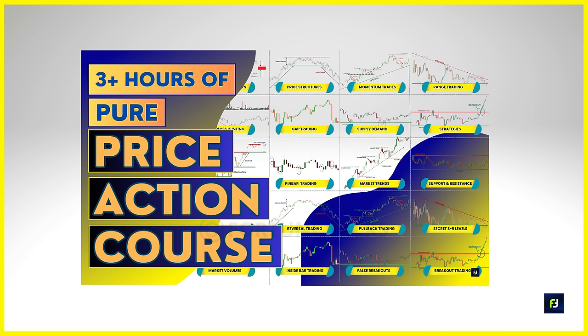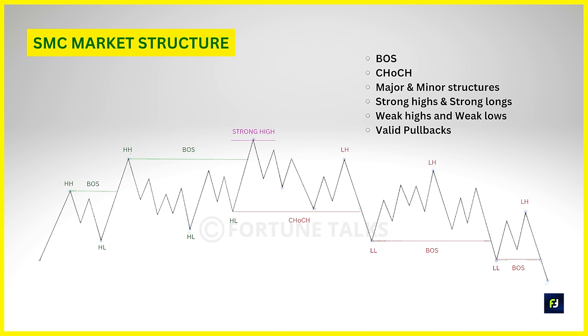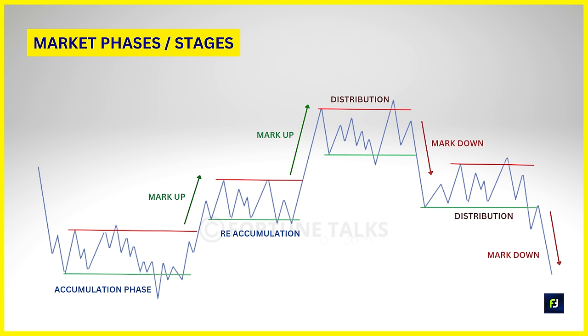You may ask: haven't we already discussed market structure and market trends in the price action course? Yes, we did, but when it comes to smart money concepts, market structure identification involves a lot more abbreviations and new terms — things like BOS, CHoCH, strong highs, strong lows, weak highs, weak lows, etc. The overall idea remains the same, but with SMC you will understand market structure in much greater detail.